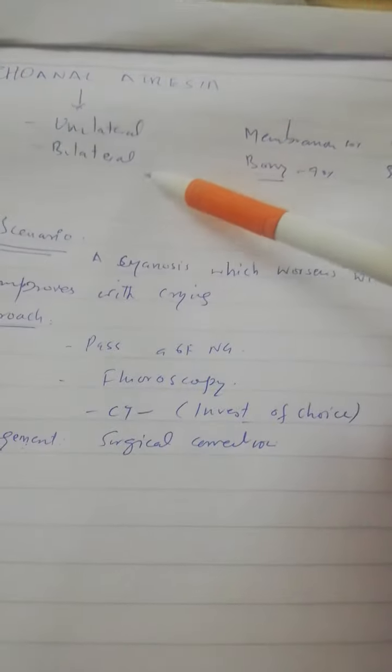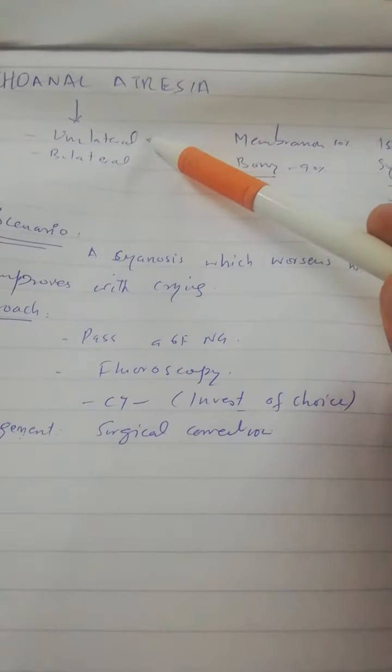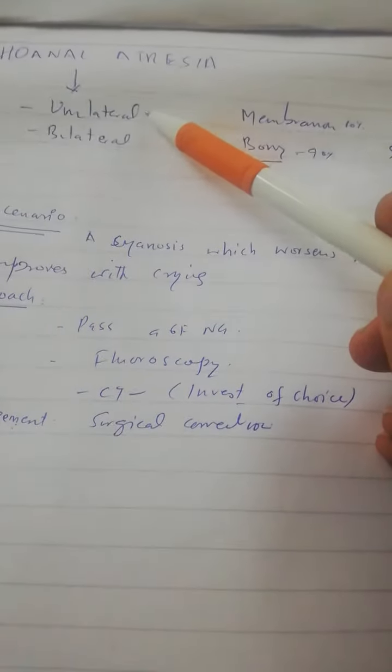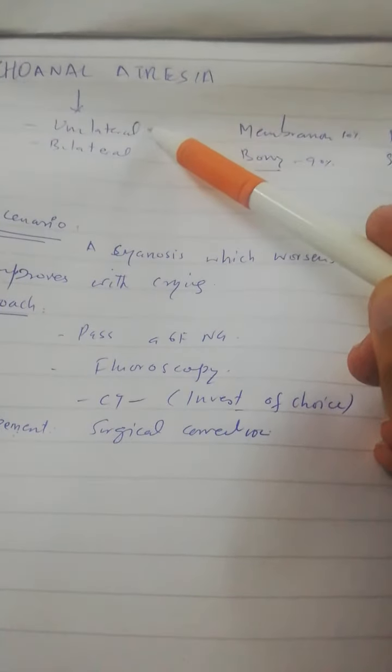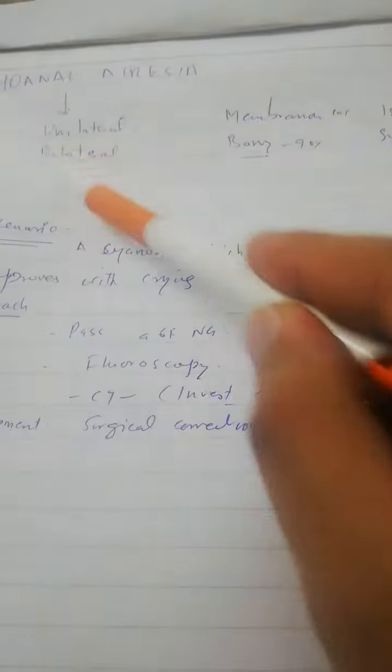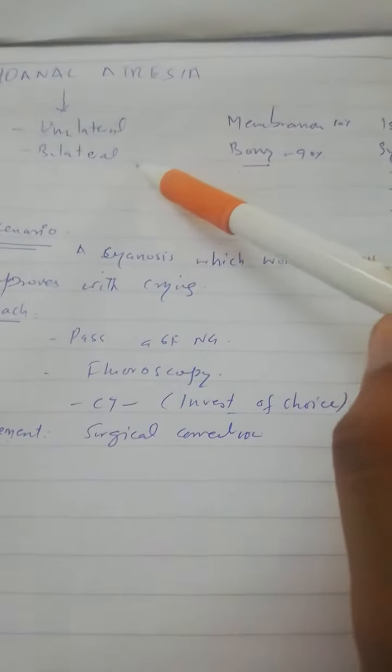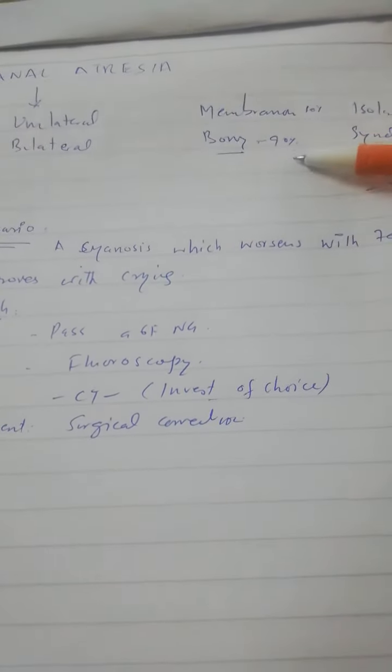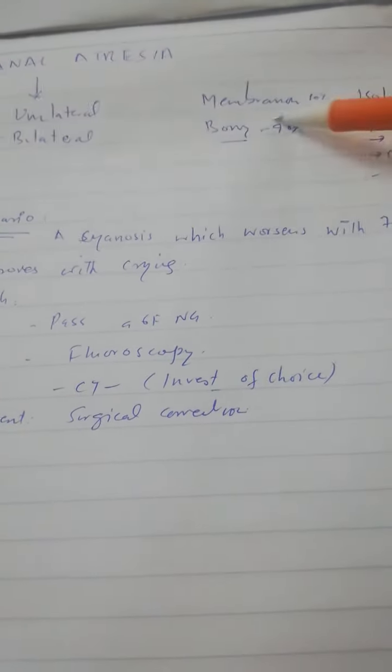Choanal Atresia may be unilateral or bilateral. Unilateral is usually missed unless the patient has some respiratory infection and the working or patent nasal cavity is closed by the infection. Then we get this patient in our clinic, but bilateral usually presents at birth. It may be membranous or bony. Membranous is 10% and most of the time it's bony.